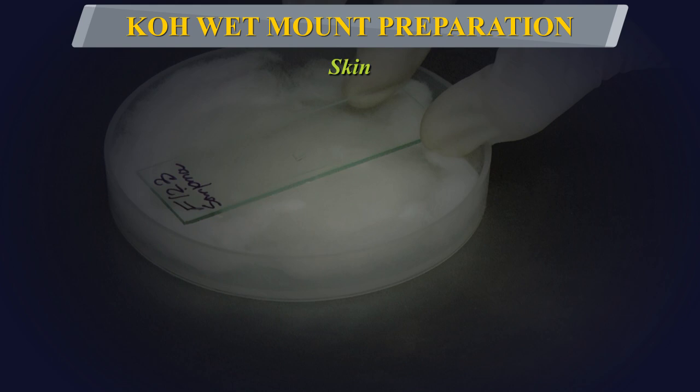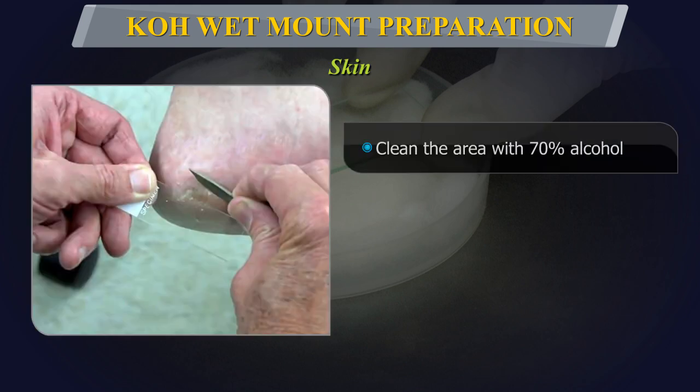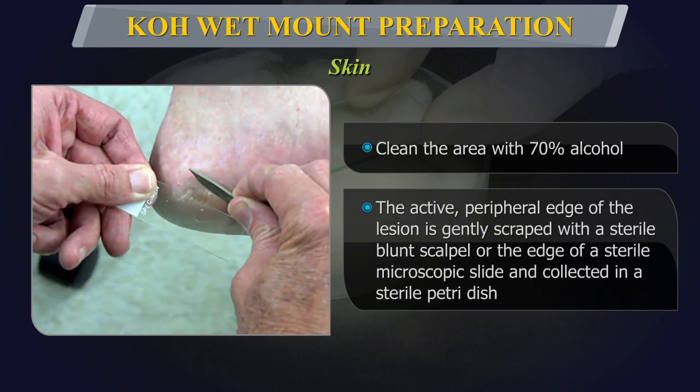Skin: Clean the area from where the skin specimen is to be taken with 70% alcohol. The active peripheral edge of the lesion is gently scraped with a sterile blunt scalpel or the edge of a sterile microscopic slide and collected in a sterile petri dish. The sample can also be collected directly onto a sterile microscopic slide.